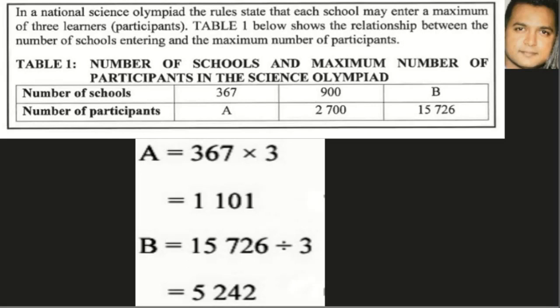Now that we know we are multiplying by three, we have an idea how to work out A and B. Looking at A, we go to 367 and multiply that by three — the same operation that happened in the second column — and we arrive at 1101.